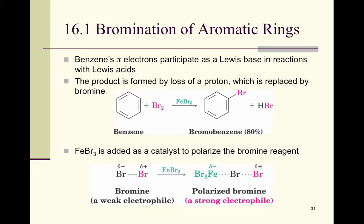Bromination of aromatic rings: the benzene pi electrons participate as a Lewis base in reactions with a Lewis acid. The product is formed by the loss of a proton which is replaced by bromine. In this bromination reaction we have Br2 and the catalyst is iron bromide. Bromine is going to replace one of the hydrogens on the ring, and this hydrogen came from the ring.